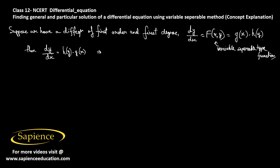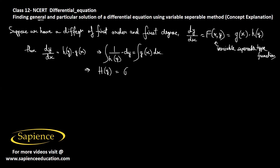We can then separate the function of y with dy and the function of x with dx, and integrate both sides. We can write it as (1/h(y)) dy equals g(x) dx, then integrate both sides. The integral of 1/h dy gives some capital H(y), and the integral of g(x) dx gives some capital G(x), plus an arbitrary constant c.